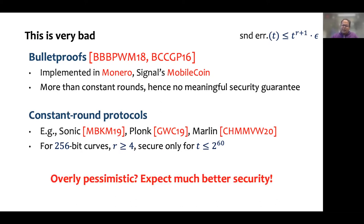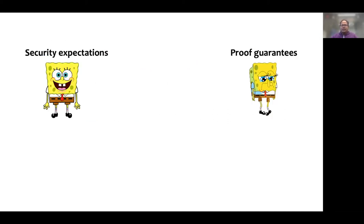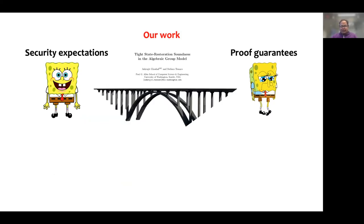Are the proofs being overly pessimistic? Because from these systems, we expect much better security. So there is a significant gap between security expectations and what guarantees we can prove. This is a little alarming because some of these systems are being used in the real world without proofs backing security expectations.